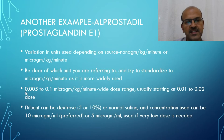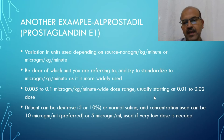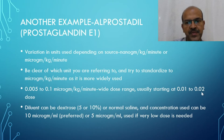The dose range is 0.005 microgram (5 nanograms) to 0.1 microgram (100 nanograms) per kilogram per minute — it's a wide dose range. We usually start with 10 nanograms, which is the same as 0.01 microgram, up to a 20 nanogram dose. The diluent can be dextrose or normal saline.